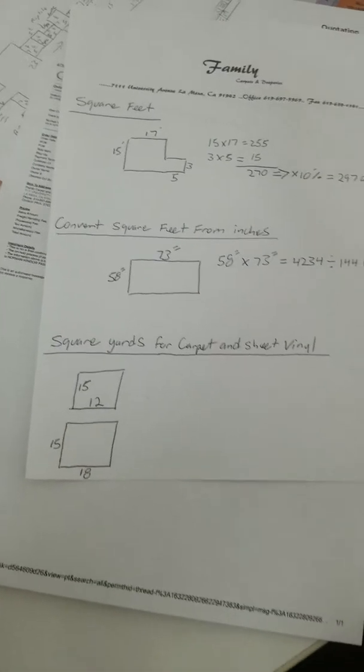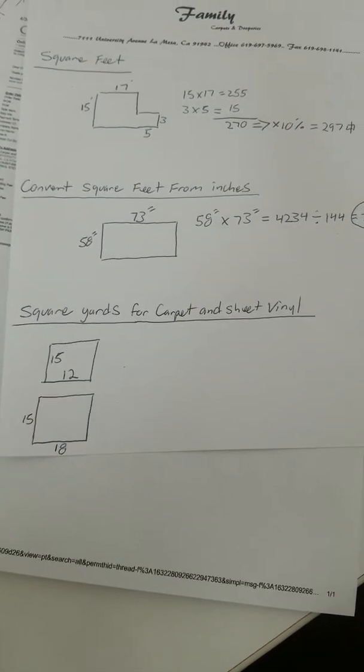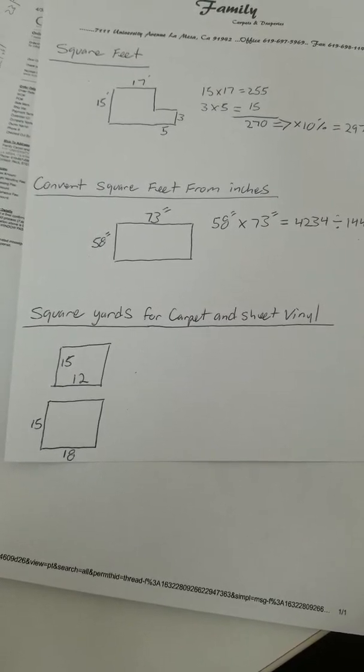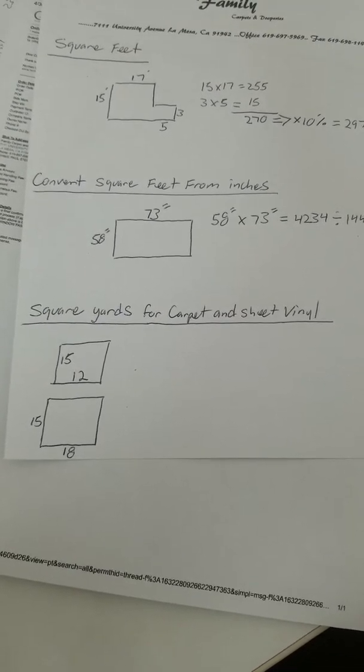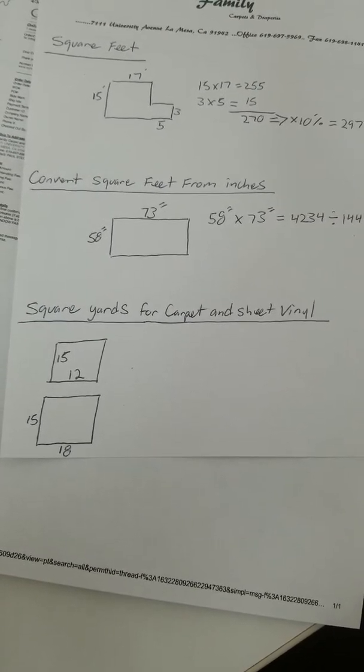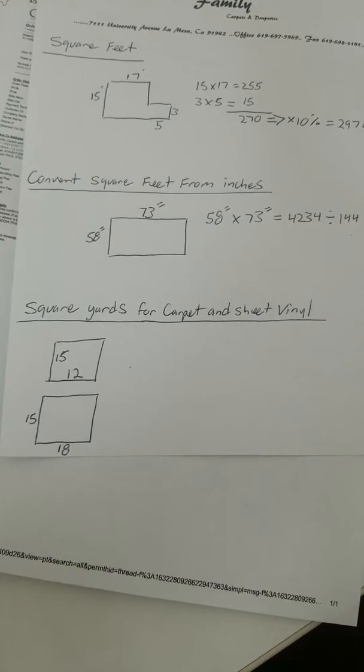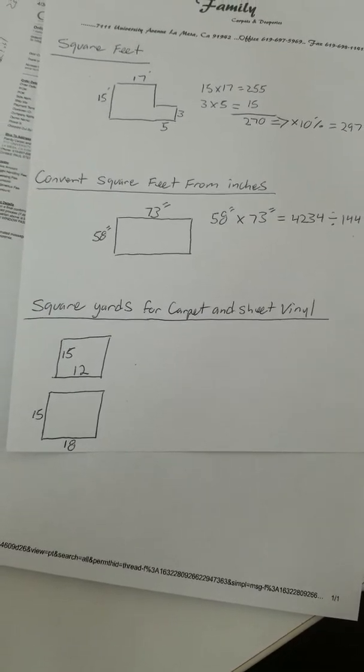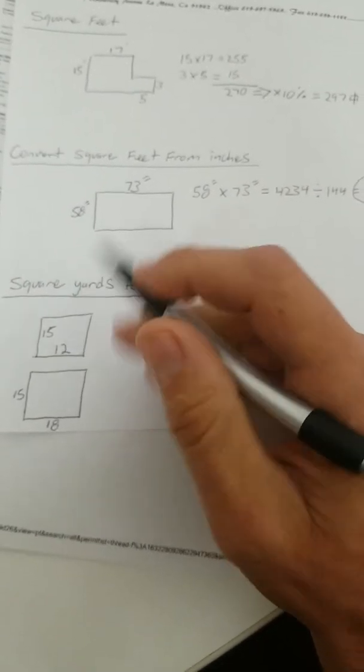Now, we're going to go to square yardage for carpet which is super vital and a little bit more tricky in that we have to convert this from square feet to square yards. Because carpet comes in 12 foot and sometimes 15 foot goods, but most of the time it comes in 12 foot goods. So, this first calculation right here,